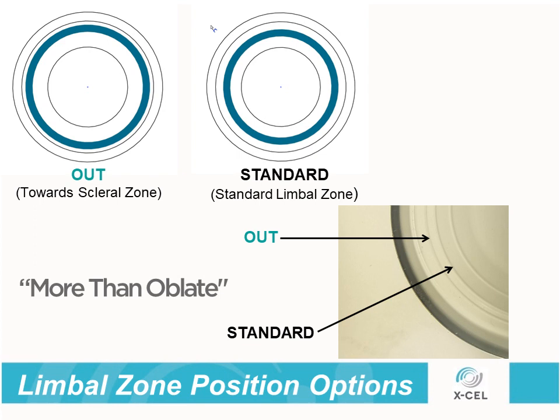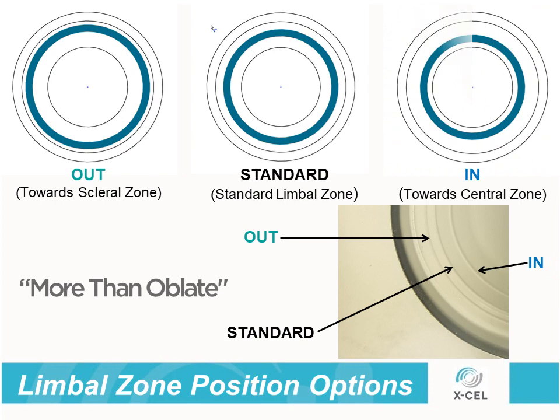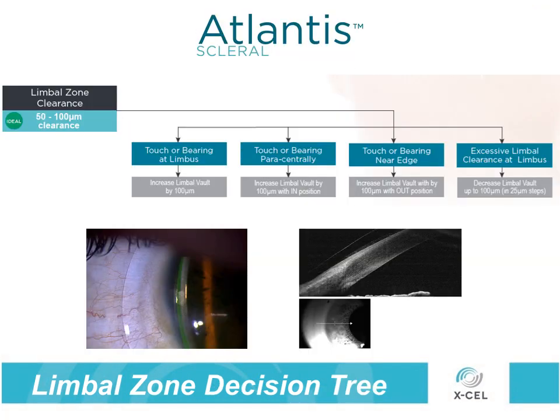For paracentral obstacles, the elevation or depression can be moved to the N position, adjacent to the central zone. This decision tree, found in your Atlantis Scleral fitting set, can help practitioners decide where to position the clearance changes needed throughout the limbal zone. It is helpful to remember that an ideal limbal clearance is 100 microns, although this is not always achievable in highly irregular corneas.